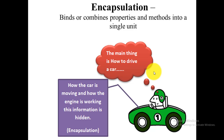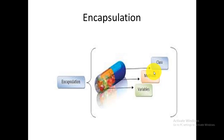Encapsulation basically binds or combines properties and methods into a single unit. A real-world example is driving a car — the driver only needs to know how to drive, not how the engine works internally; that information is hidden. This is called encapsulation, achieved in C++ using access specifiers. Another analogy is a capsule, where all medicine elements are enclosed inside a coated surface — similarly, class methods and variables are encapsulated inside a class.